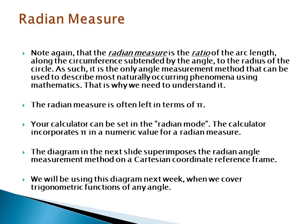The radian measure is the ratio of the arc length along the circumference subtended by the angle to the radius of the circle. It is the only angle measurement method that can be used to describe most naturally occurring phenomena using mathematics. That is why we need to understand it.